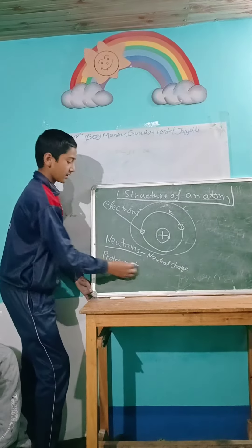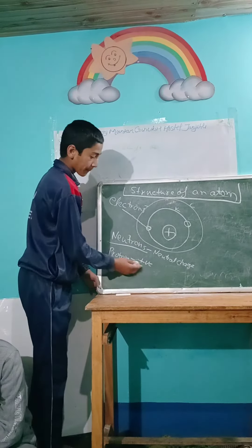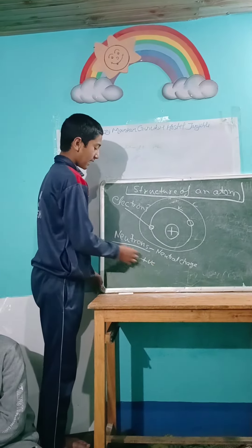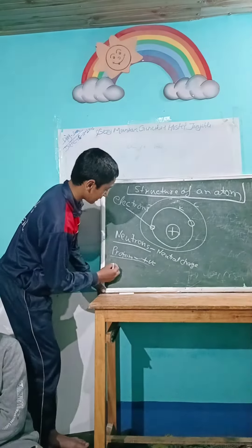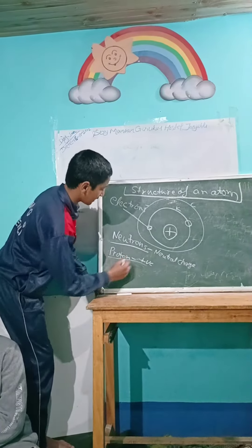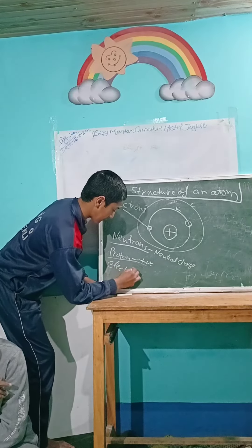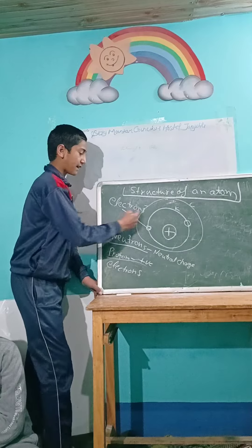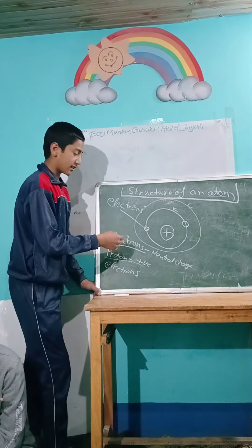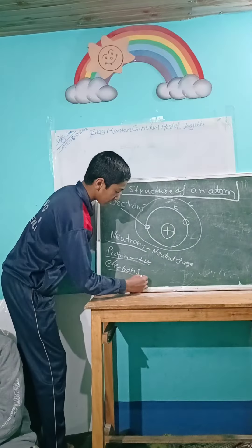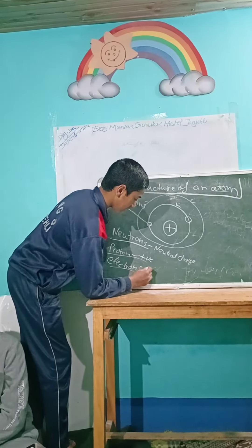Dear friends, protons were discovered by Goldstein. And neutrons were discovered by James Chadwick. And next, there are electrons. Electrons have negative charge on them and they conduct electricity in any conductor. These were discovered by J.J. Thomson.